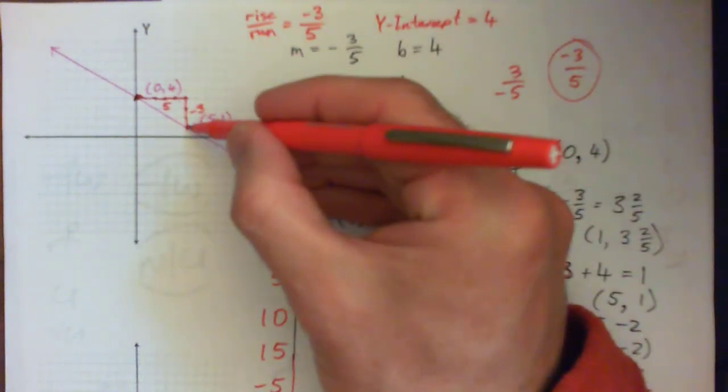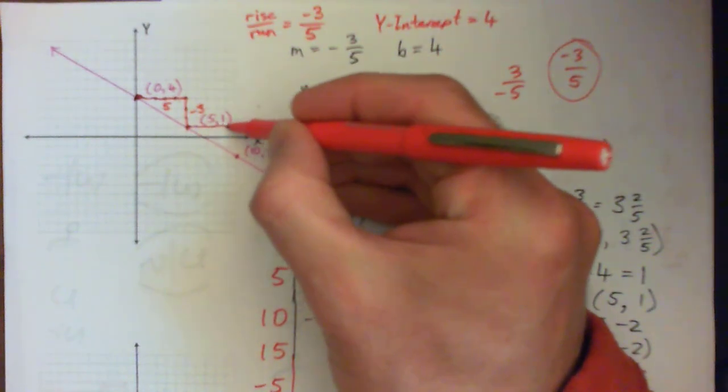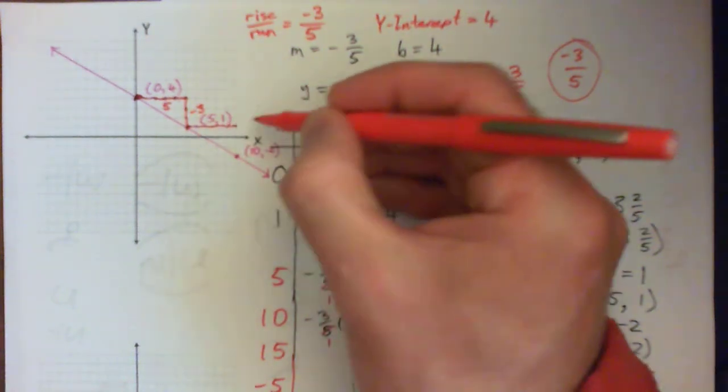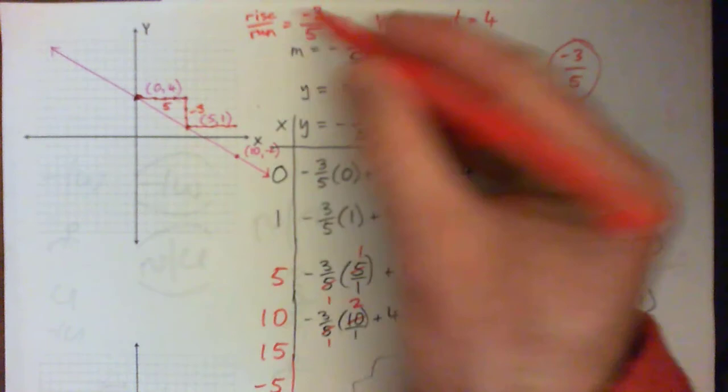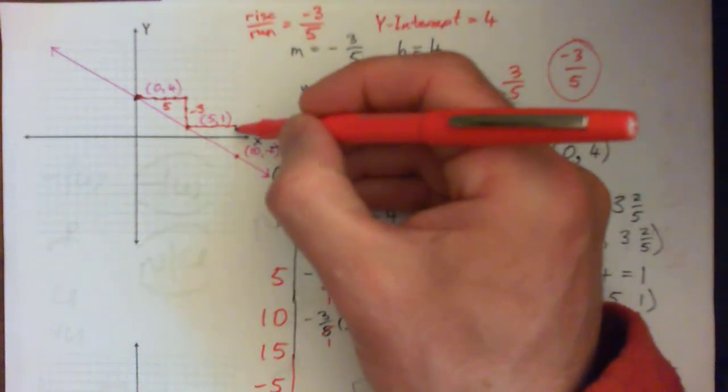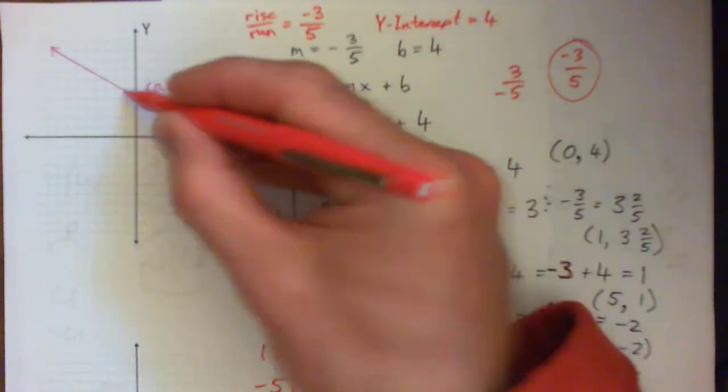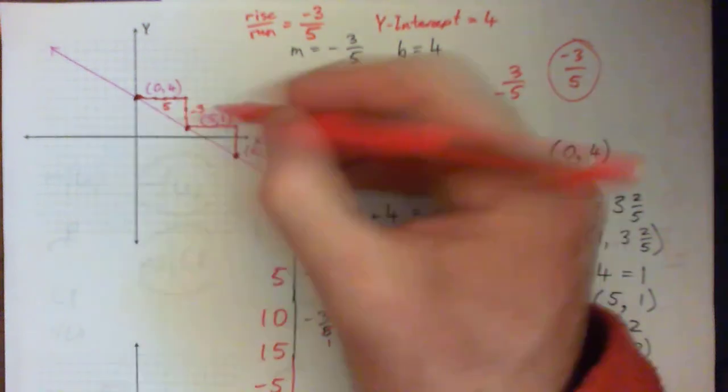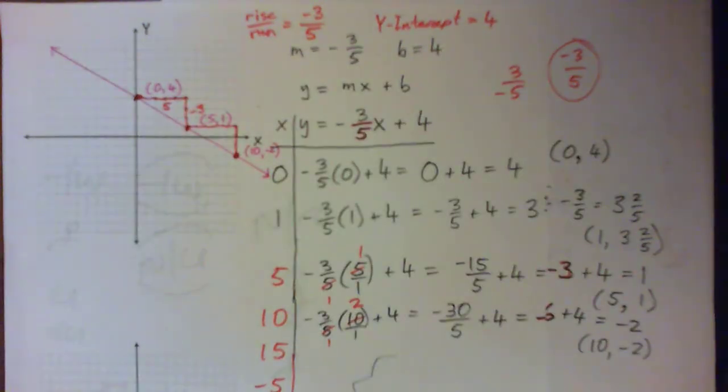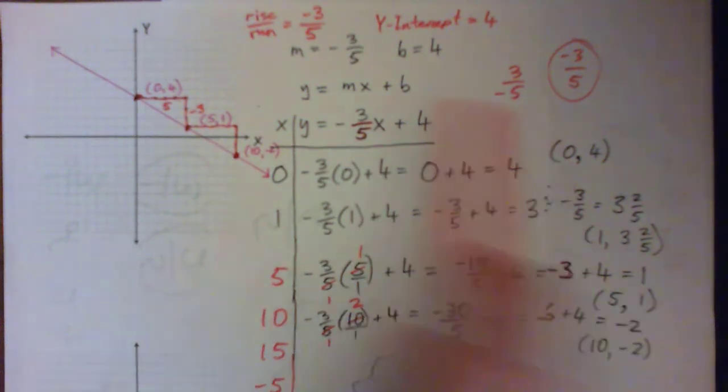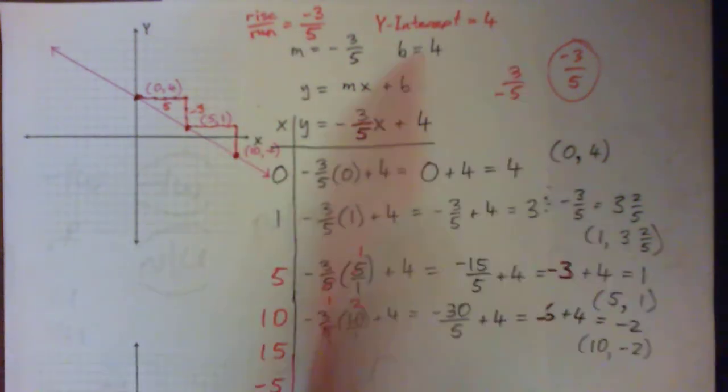Then we're going to run again: 1, 2, 3, 4, 5, run 5 and stop. Then we're going to rise -3, which means go down 3: 1, 2, 3. We get this point. We can get the points that way as well, with our little stairs here. Then we can draw a line through it. We've beaten this to death because we did the rise over run, the Y intercept, and we made a table.